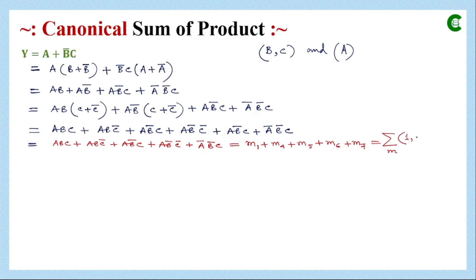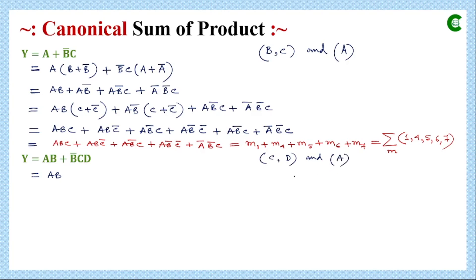Now we evaluate another example where Y is a logical function with two terms: the first term has AB and the second term has B-complement CD. Altogether this function has four variables A, B, C, D, but neither term has all the variables, so both terms are not minterms. We will not retain them. In the next step, the first term is missing C and D, and the second term is missing only A.